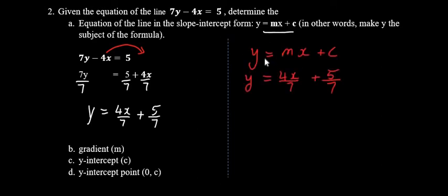So lining up the equation with the slope-intercept form, we can identify our gradient. Our gradient is 4 over 7.